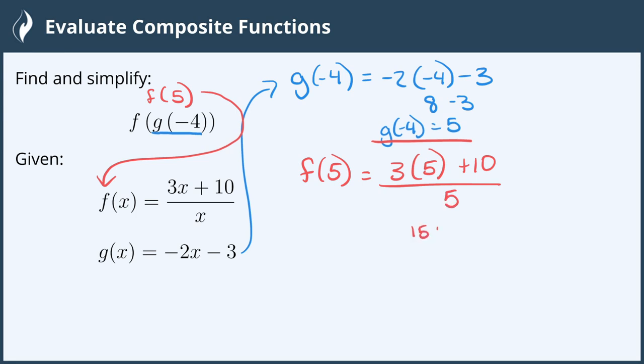3 times 5 is 15. 15 plus 10 is 25, still divided by 5, and 25 divided by 5 is 5. So the entire composite of f of g of negative 4 equals 5.